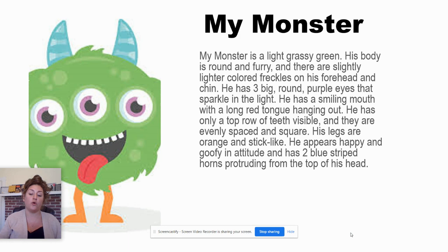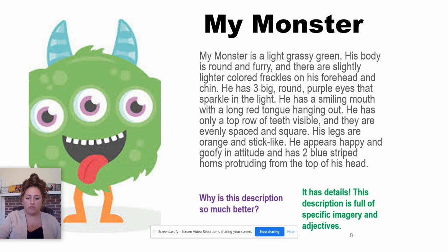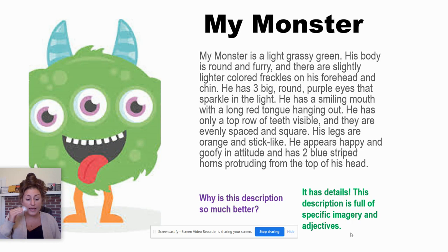So why is this description so much better than the first one? The first one was really short, really vague — there was not a lot of information. This one has details. This description is full of specific imagery and adjectives. When we're talking about images, we're talking about color, we're talking about shape — taking these things that we see with our eyes and putting them into words. We're also using very specific adjectives and descriptors, so you want to make sure that as you're writing, you're giving as much detail as possible.